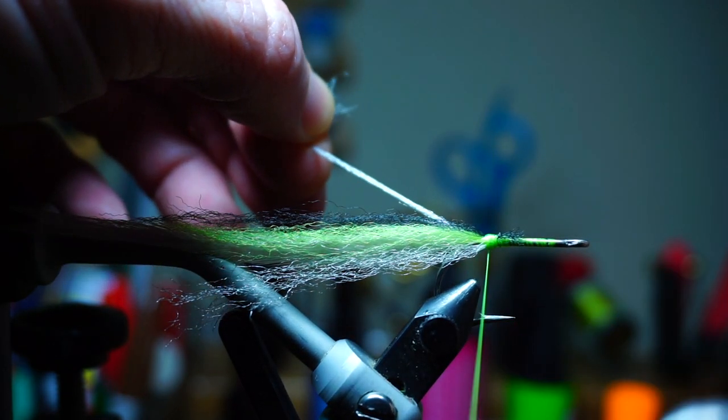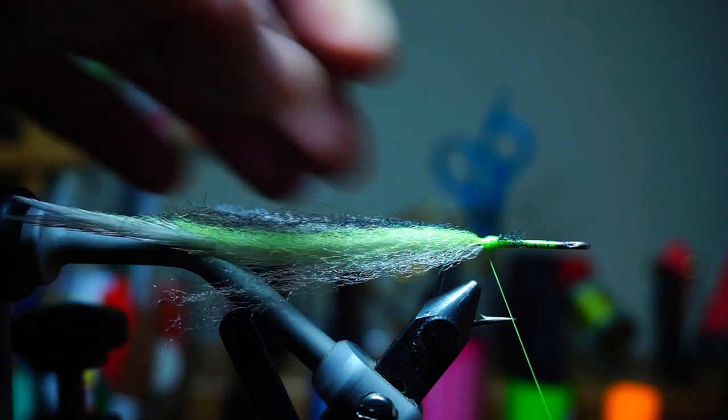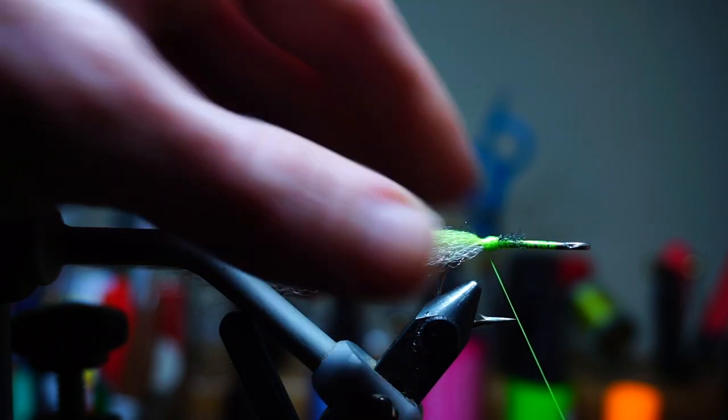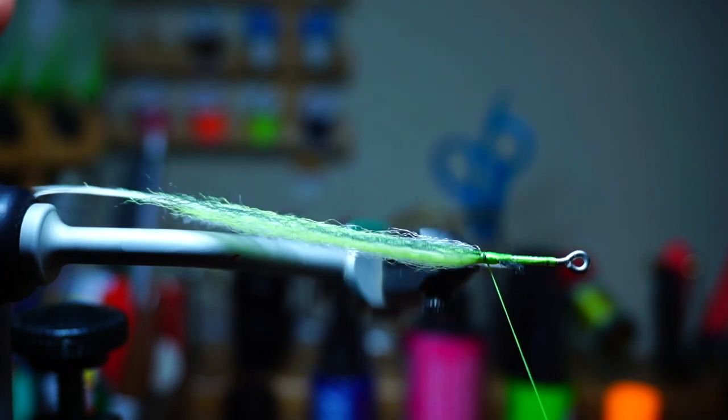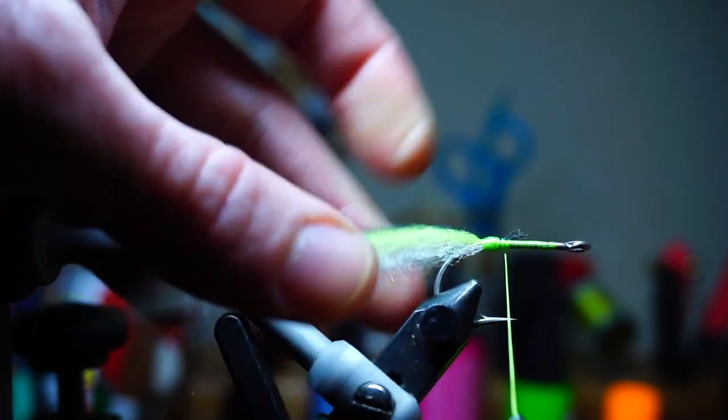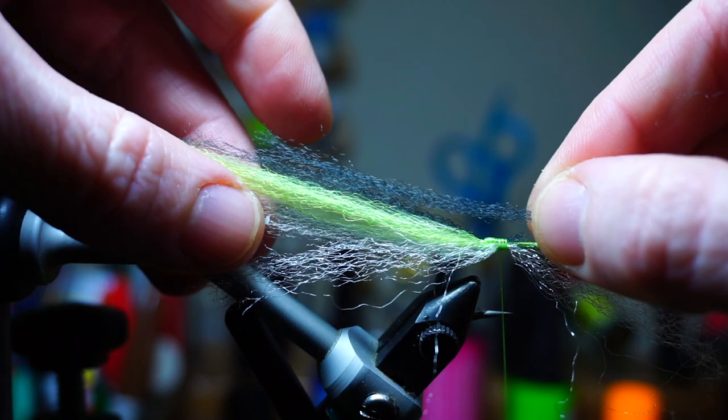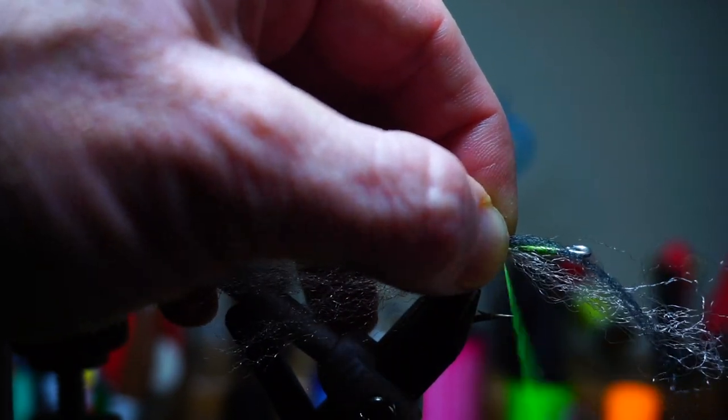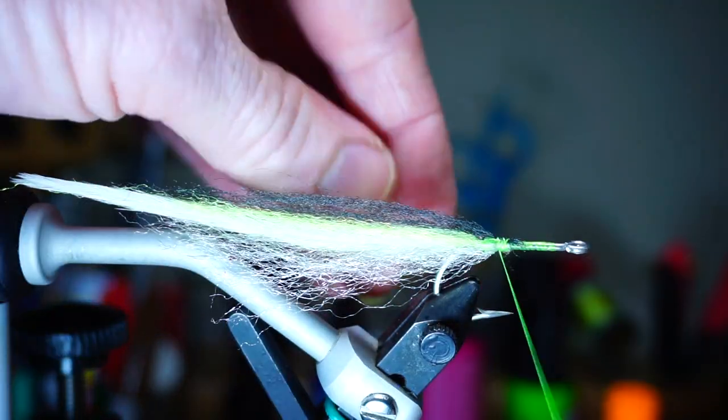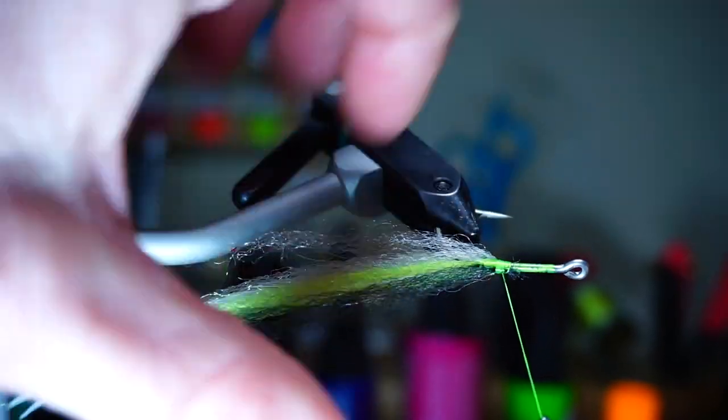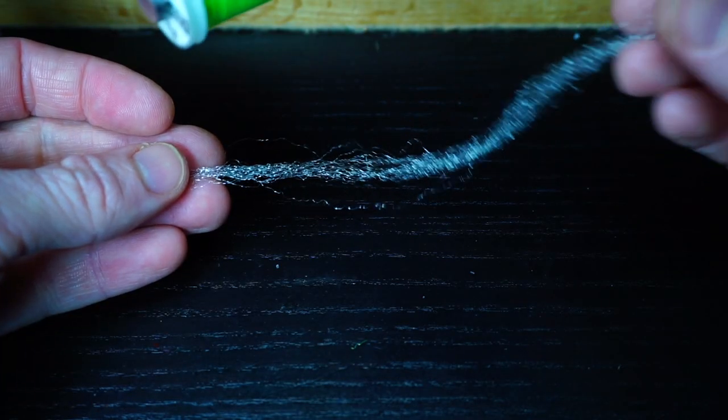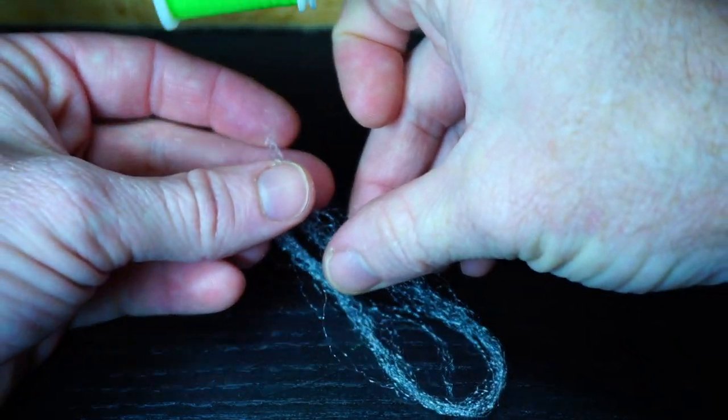You can see the original fiber is a little bushier than silky stuff, which makes for a larger belly without bulking it up so much. Now we're going to bring our thread up slightly and do the same thing with the black and silver fibers once more, then advance your thread forward a little again.